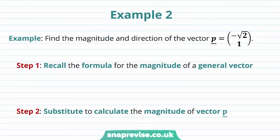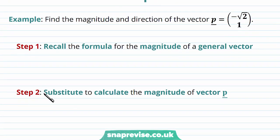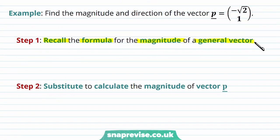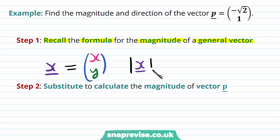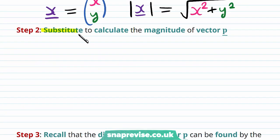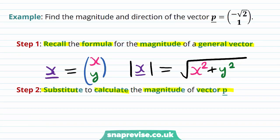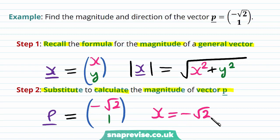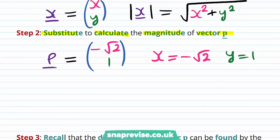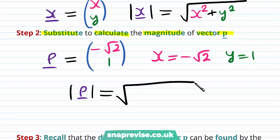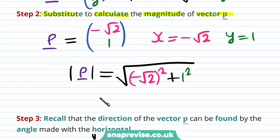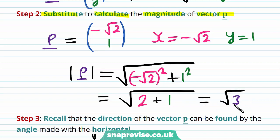Our second example asks us to find the magnitude and direction of the vector p equal to (−√2, 1). Recalling the formula: if x is the vector (x, y), then the magnitude of x equals the square root of x² + y². We have x = −√2 and y = 1. Therefore the magnitude of p equals the square root of (−√2)² + 1², which is the square root of 2 + 1, equal to the square root of 3. So the magnitude of p is √3.